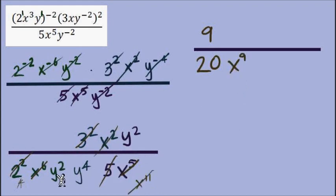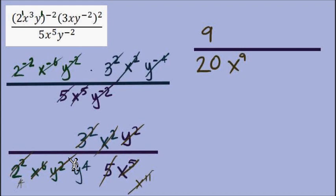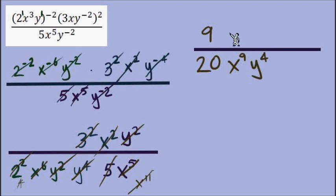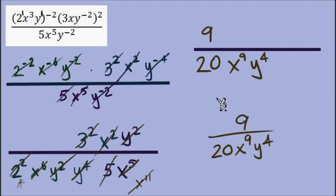I'll do something similar with y's. I have 2 y's in the numerator, with 4 more y's in the denominator — so 6 y's in the denominator and 2 y's in the numerator. The difference is 4, giving y to the 4th in the denominator. We're finished — no exponents outside of parentheses, no negative exponents, and the fraction is simplified. I'll rewrite it with a proper fraction bar: 9 over 20 x to the 9th y to the 4th.